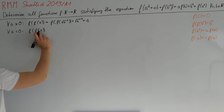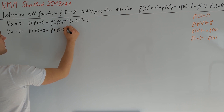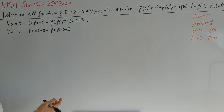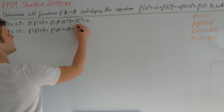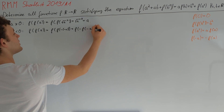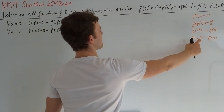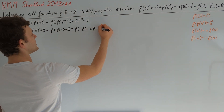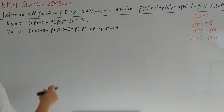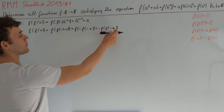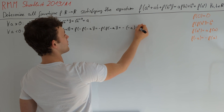To extend this to negative a, we rewrite f(f(a)) as f(f(−(−a))) and use f(−a) = −f(a), giving f(−f(−a)). Applying the formula again with f(−a) for a yields −f(f(−a)). Since −a is positive, f(f(−a)) = −a, so all of this equals −(−a) = a.